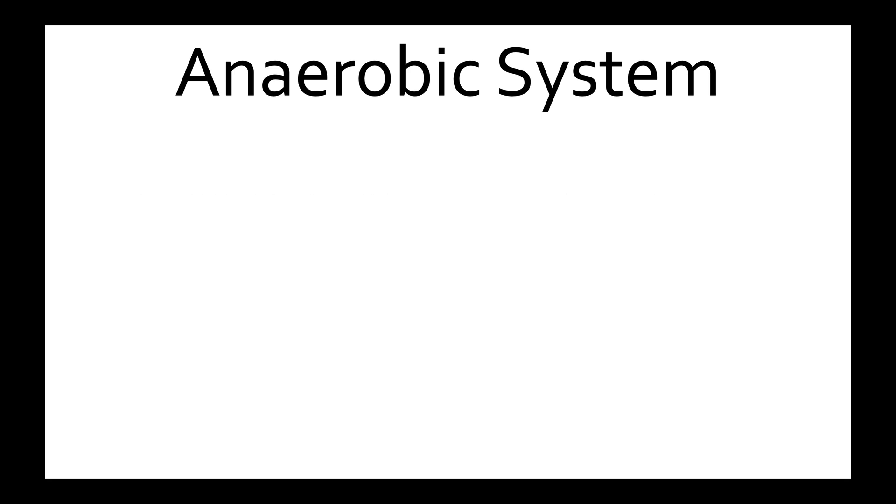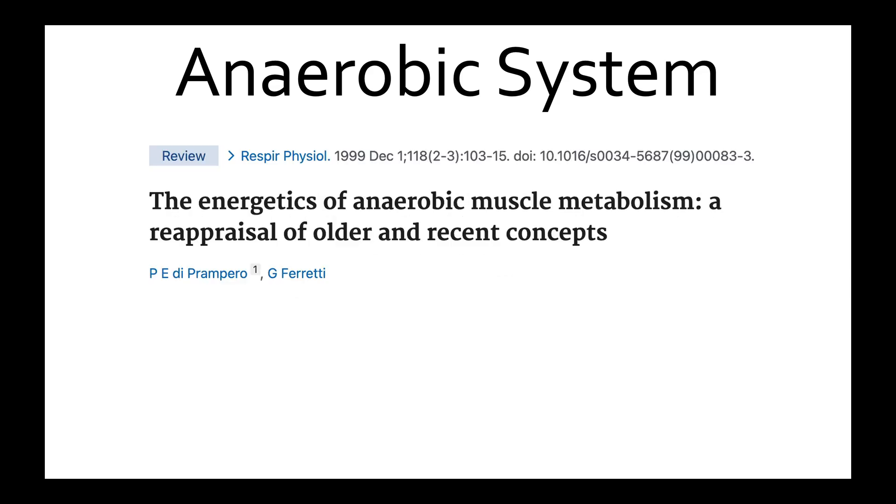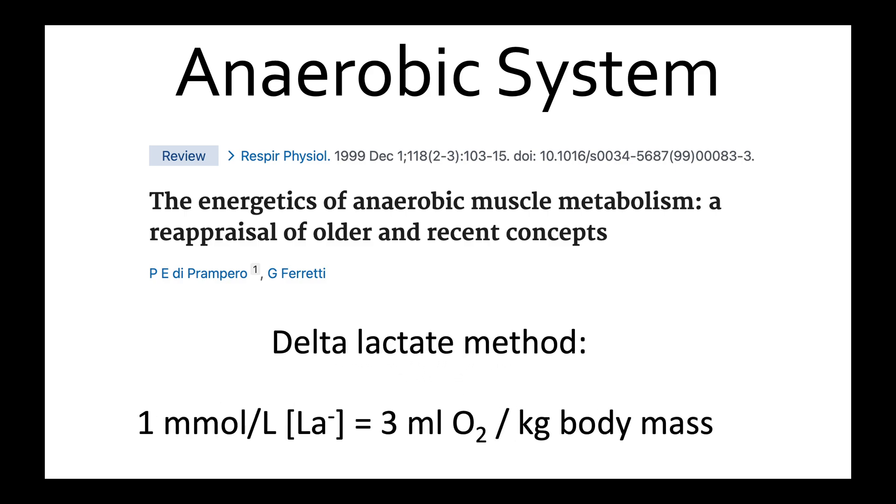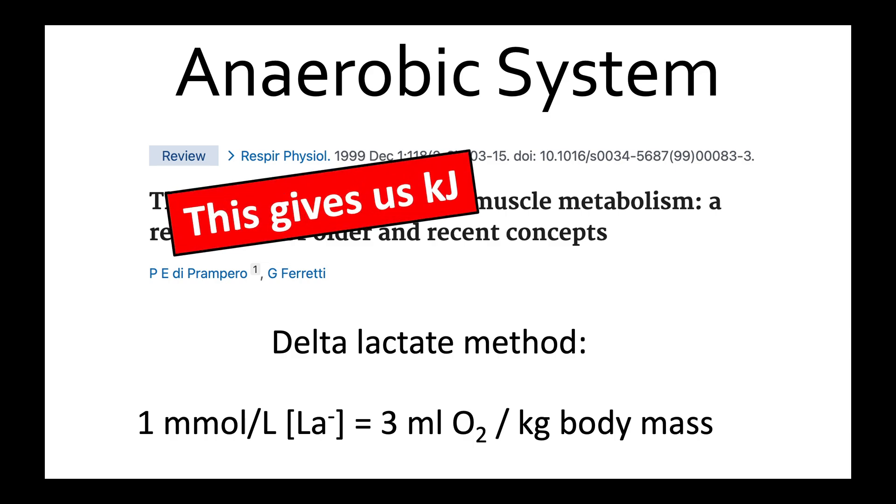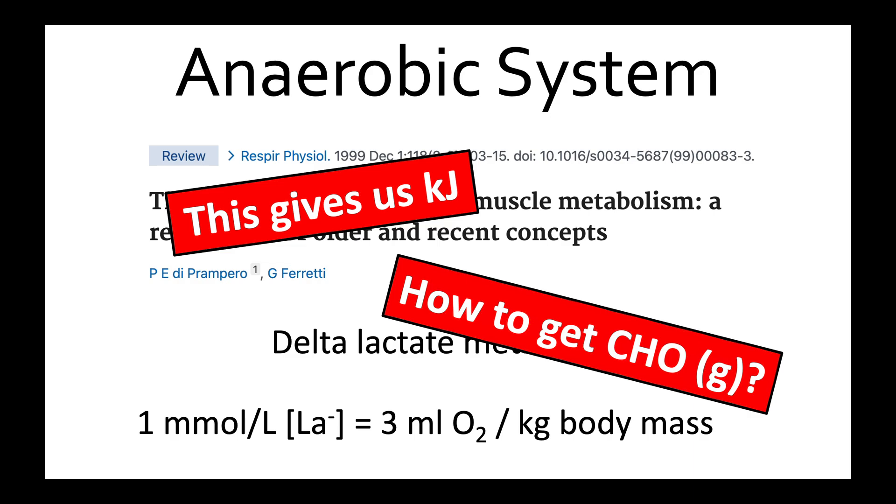For the anaerobic system, we can use the change in lactate from pre to post exercise to quantify the anaerobic contribution. That may sound like a bit of magic, but an understanding of the energy equivalence produced by the anaerobic system goes back nearly 100 years. What it works out to is that each millimolar lactate increase is equivalent to 3 milliliters of oxygen per kilogram of body mass. So this gives us a value of energy in kilojoules. But how do we get to grams of carbohydrate?